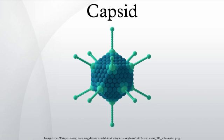The prolate form is an icosahedron elongated along the fivefold axis and is a common arrangement of the heads of bacteriophages. Such a structure is composed of a cylinder with a cap at either end. The cylinder is composed of 10 triangles.